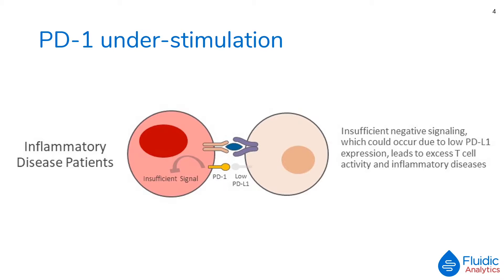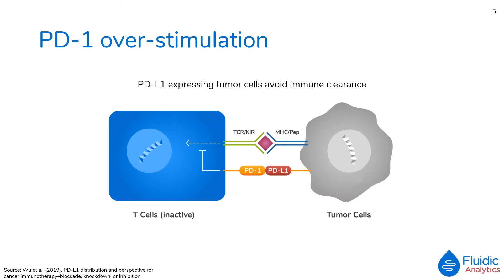Insufficient stimulation of PD-1 is not the only situation observed in disease states. PD-1 is a carefully balanced regulator and can be overstimulated. The most well-known example of PD-1 overstimulation is in cancer. Some tumour cells are able to overexpress PD-L1, which blocks the immune response and prevents T cells from killing these cancer cells.